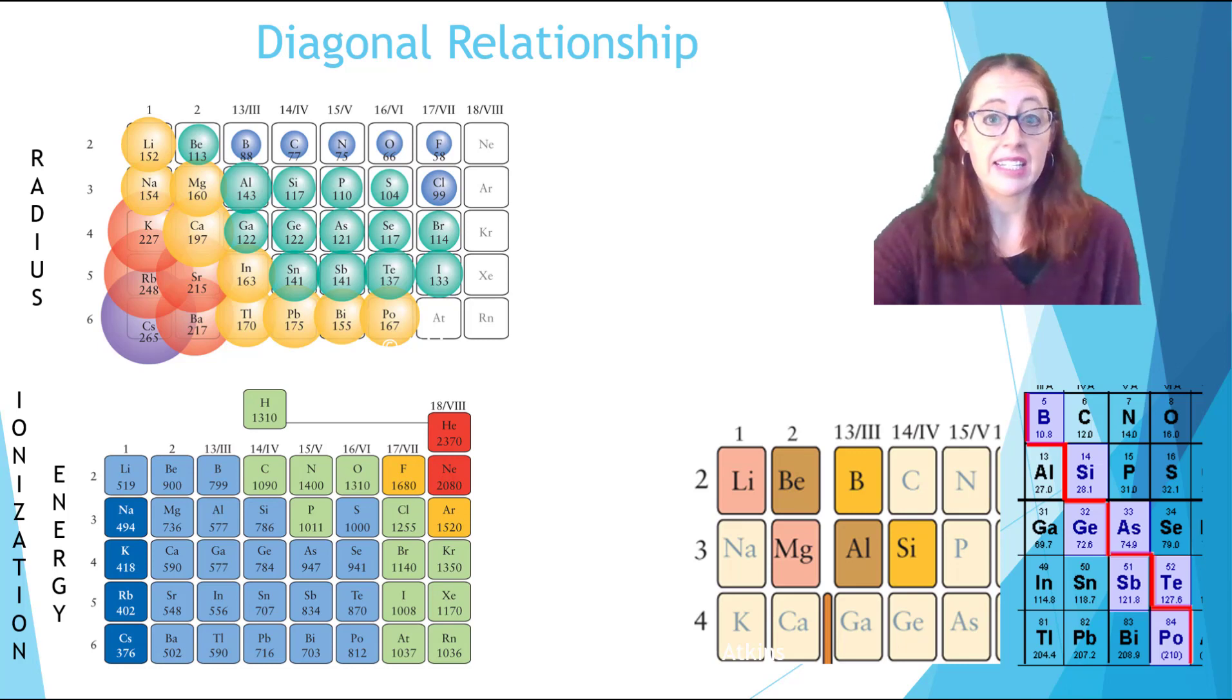The same is true for ionization energy. Going down the periodic table the energy gets smaller. Going to the right it gets bigger. So going down and to the right leads to similar values.